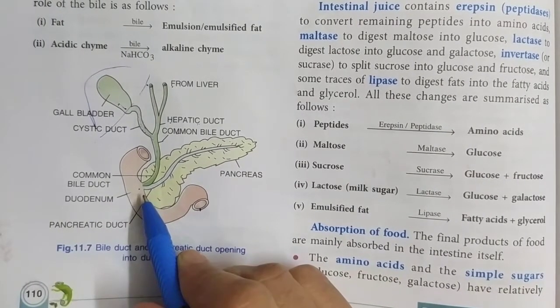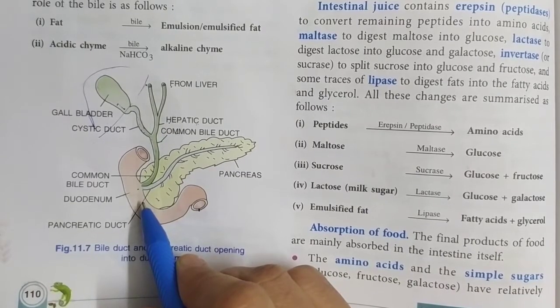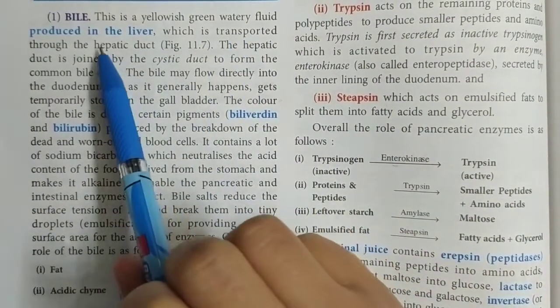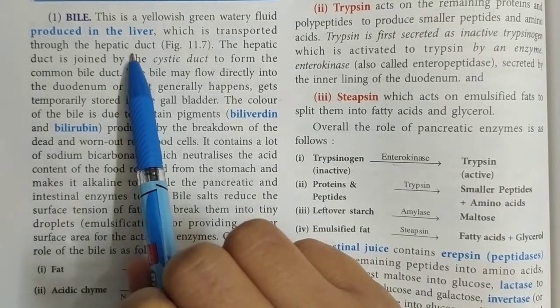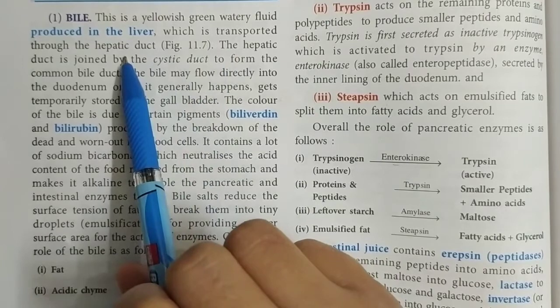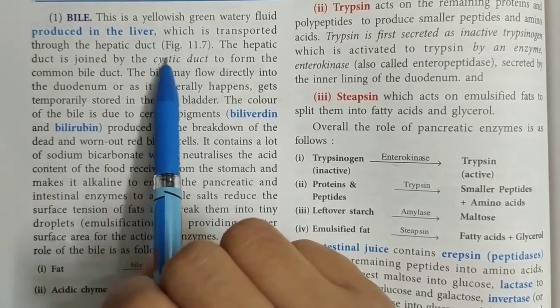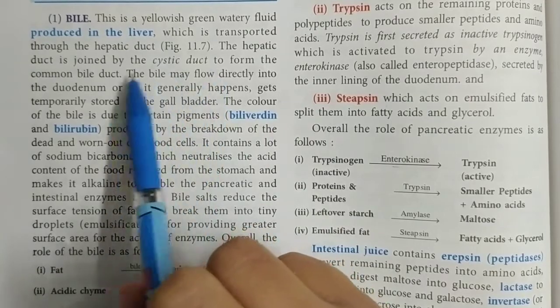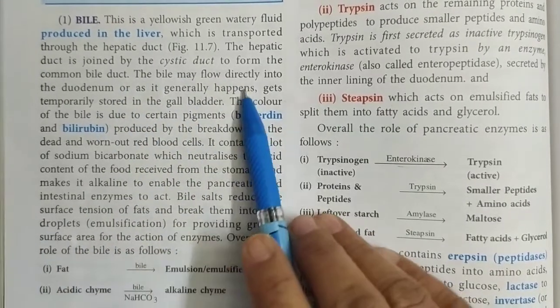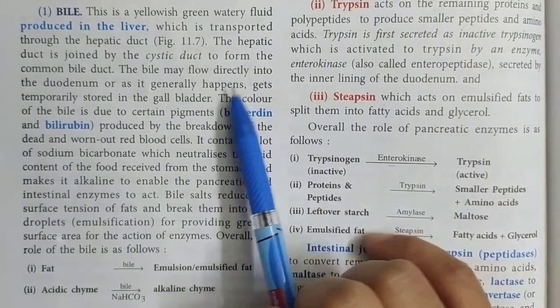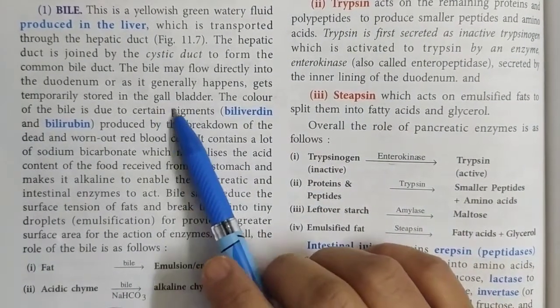So now let us see what role is played by the bile. Bile is a yellowish green watery fluid produced in the liver. You all know that liver secretes the juice, we call it bile juice. And it is brought through the hepatic duct. Hepatic duct is joined by the cystic duct which stores the bile juice. And bile can also open directly into the duodenum as it generally happens, and sometimes it is stored in the gallbladder.